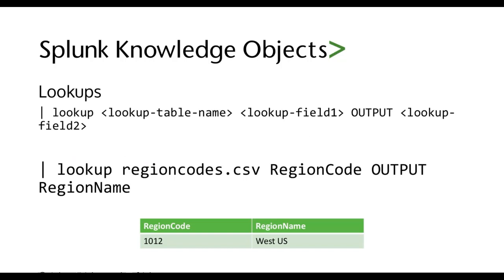Here's how a lookup command in Splunk looks — notice it's after the pipe because it is a command. So we do: lookup, lookup table name, lookup field one, then output, and lookup field two. Lookups have a lot of different options and they're very powerful. For this demo we're just going to do a very simple lookup with two columns: lookup regioncodes.csv, region code, output region name. It's really quite simple.